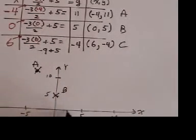My third point, 6 and negative 4. So I go across 6, I go down to negative 4, and there is my point C.